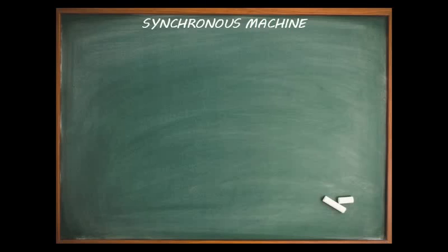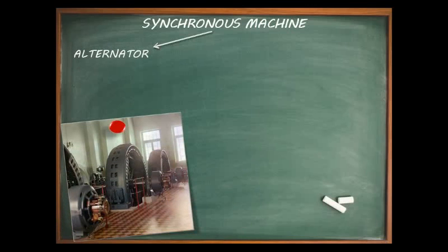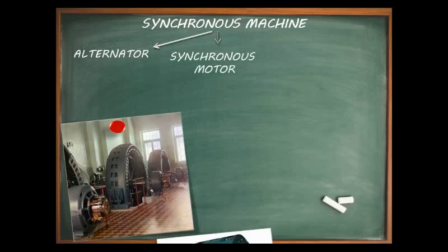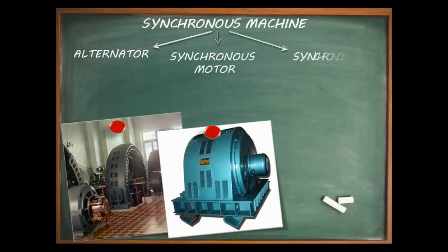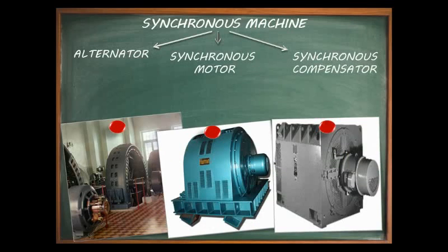Synchronous machines are classified into synchronous generators or alternators, synchronous motors, and synchronous compensators. Alternators, like DC generators, convert mechanical energy into electrical energy. Large AC networks operating at a constant frequency of 50 Hz or 60 Hz rely almost exclusively on synchronous generators. The generation of electricity at power plants — whether hydroelectric, nuclear, thermal, or small private diesel engine plants — is done by alternators only.